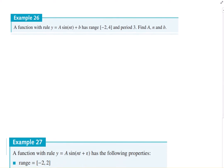26. A function with the rule a sin nt plus b has a range of negative 2 to 4 and a period of 3. Find a, b and n. So again, quick little sketch.